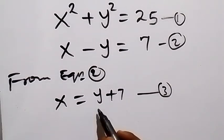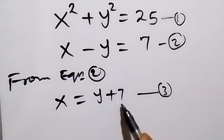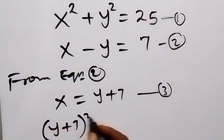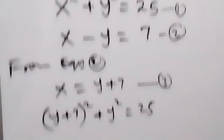Then put equation 3 in equation 1. Instead of writing x here, we write y plus 7. So equation 1 becomes (y plus 7) squared plus y squared equals 25. Now when we simplify this,